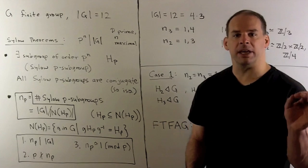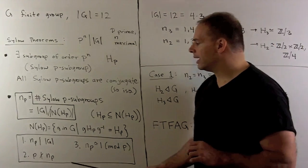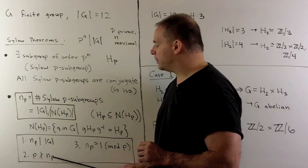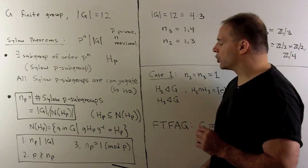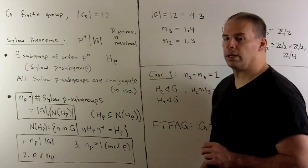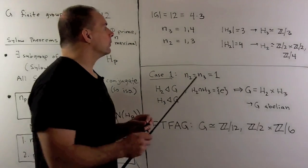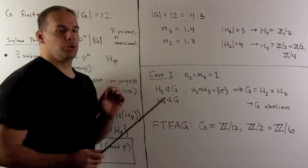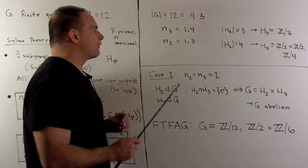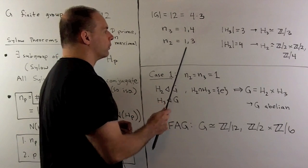With that, n sub p is restricted by the following three rules: n sub p divides the order of the group; p does not divide n sub p; and n sub p is congruent to 1 modulo p. Now, if the order of the group is equal to 12, we have two prime divisors, 2 and 3, which means we can have for n sub 3: one or four. For n sub 2: one or three.